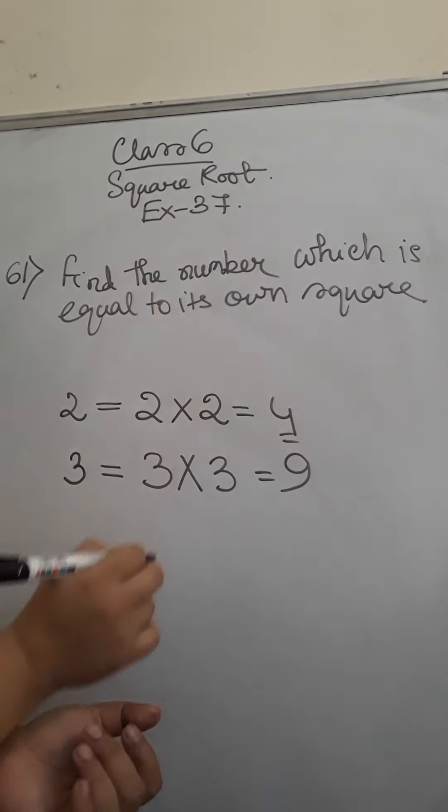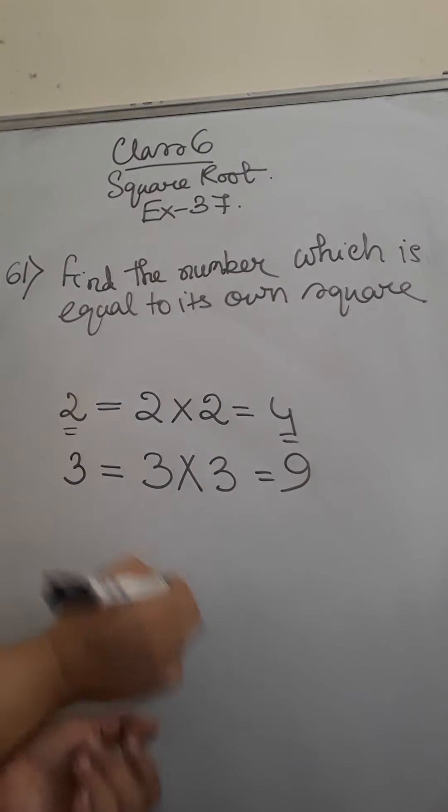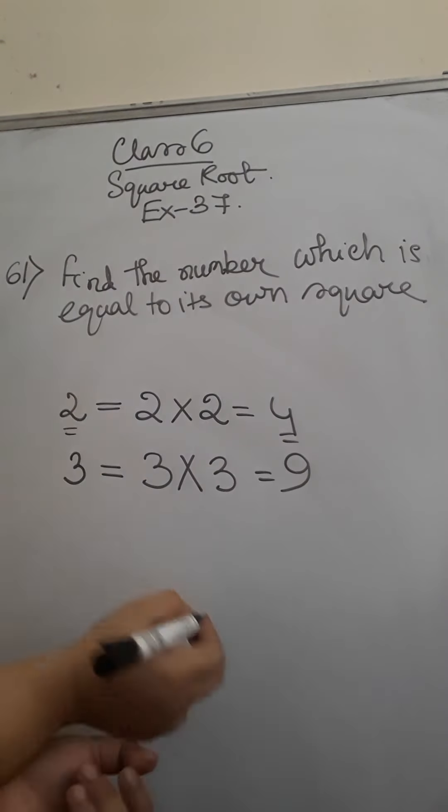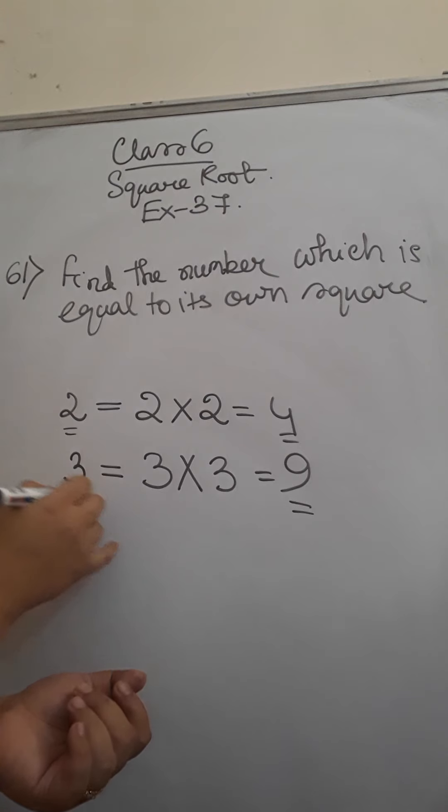So the result of square never matches with the number because you have multiplied the number twice and you got that result.